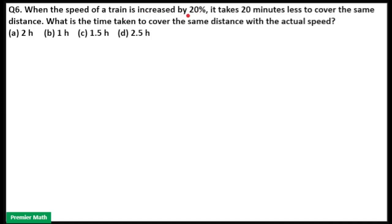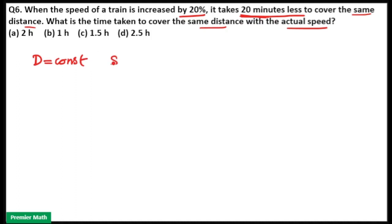The speed of a train is increased by 20%, and it takes 20 minutes less to cover the same distance. What is the time taken to cover the same distance with the actual speed? Here, distance is constant, which means speed is inversely proportional to time. Whenever distance is constant, take the speed ratio and time ratio.